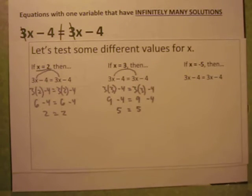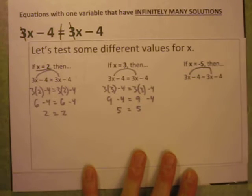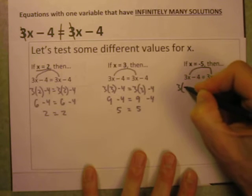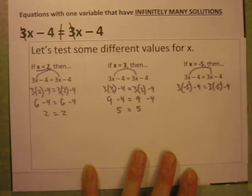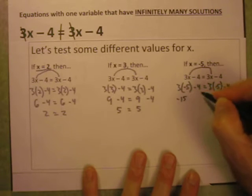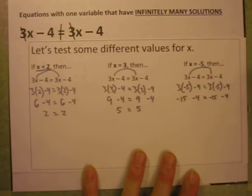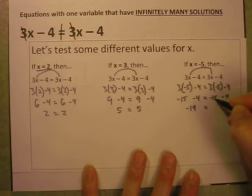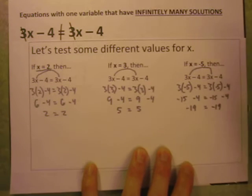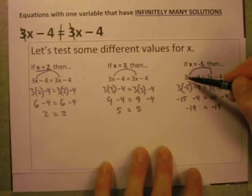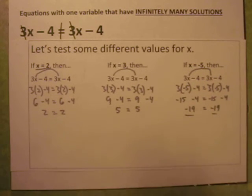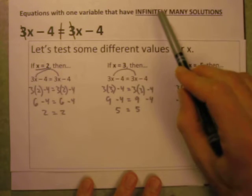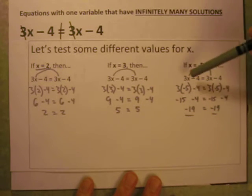Would a negative mess it up in some way? Let's try negative 5 in for X. 3 times negative 5 minus 4 and 3 times negative 5 minus 4 — you can see this is going to be the same on both sides. You get negative 15 minus 4 and negative 15 minus 4. Negative 15 minus 4 is negative 19. Sure enough, even with a negative value, when you substitute negative 5 in for X, both sides of the equation are the same. This equation, 3X minus 4 equals 3X minus 4, will always be true no matter what value of X you choose, so there are infinitely many solutions.